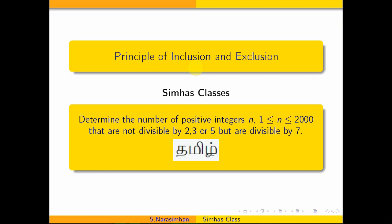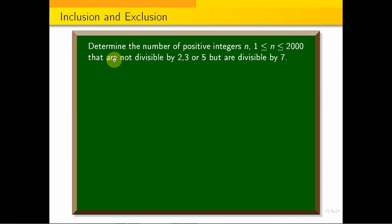Hi students. Welcome to CMOS classes. Principle of Inclusion and Exclusion. One important problem: Determine the number of positive integers n, where 1 ≤ n ≤ 2000, that are not divisible by 2, 3, or 5, but are divisible by 7.